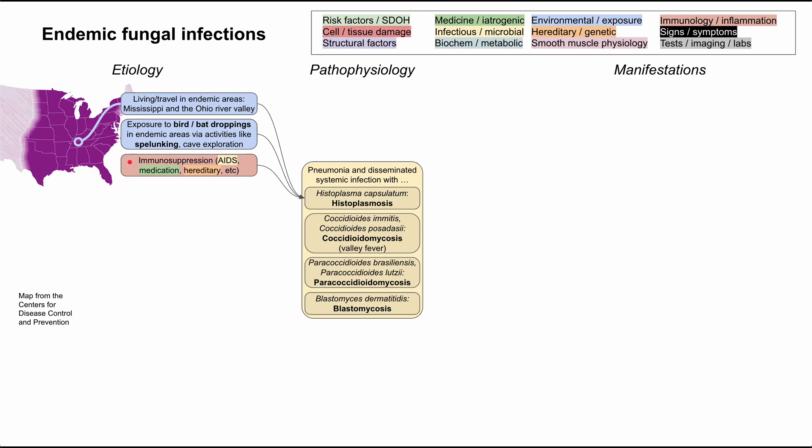Immunosuppression also predisposes you to histoplasmosis — and likely all the other fungi here as well. This could be from AIDS, immunosuppressive medications such as after an organ transplant, or a hereditary deficiency in the immune system.